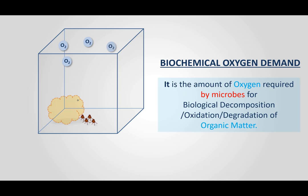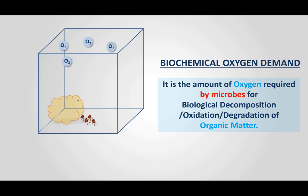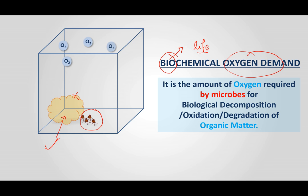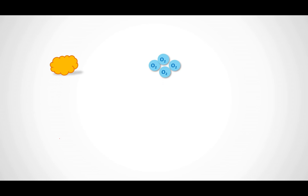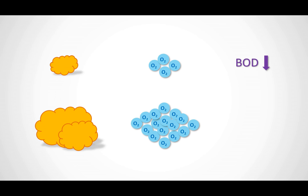Biochemical oxygen demand is nothing but the amount of oxygen required by microbes for biological decomposition of organic matter. 'Bio' means anything that has life — microbes have life — and they are demanding oxygen for degradation of organic matter. So if we know the amount of oxygen demanded by microbes, we can indirectly calculate the amount of organic matter present. If organic matter is less, BOD will be less and pollution level will be less; if organic matter released is very high, microbes require more oxygen and BOD will be more.